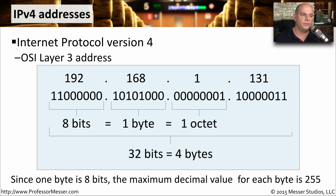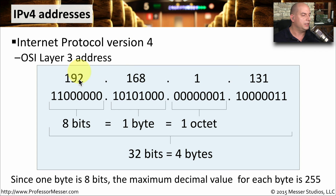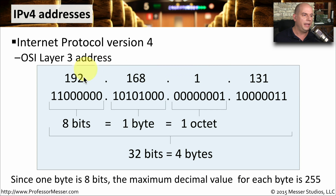IPv4 stands for Internet Protocol Version 4. You might hear people refer to this as an OSI Layer 3 address. These addresses are usually four numbers separated with a period — we call this a dot. So 192.168.1.131 is an IPv4 address.